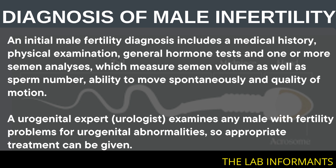An initial male infertility diagnosis includes a medical history, physical examination, general hormone tests, and one or more semen analyses, which measure semen volume, sperm count, ability of sperm to move spontaneously, and quality of motion. A urologist examines any male with infertility problems for urogenital abnormalities so that appropriate treatment can be given.